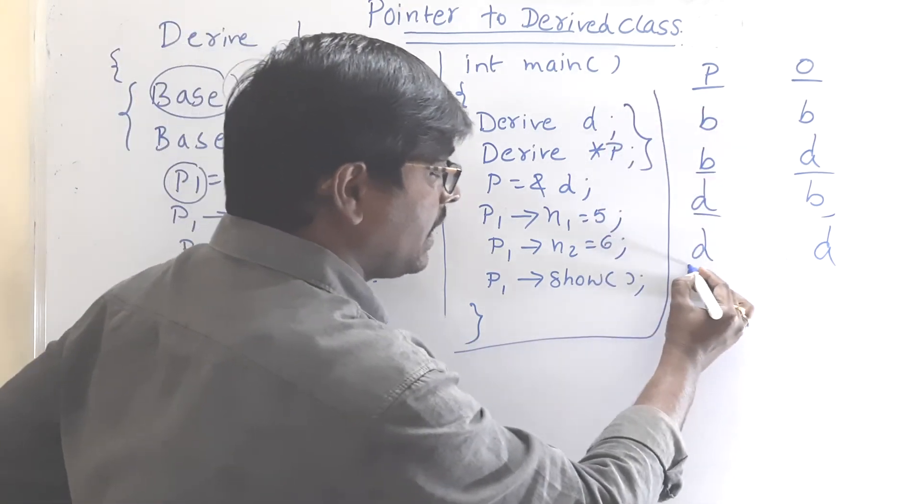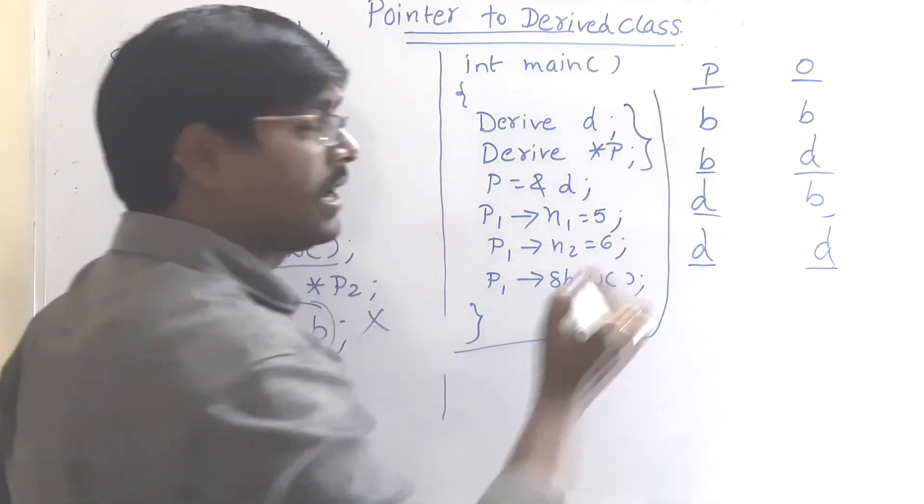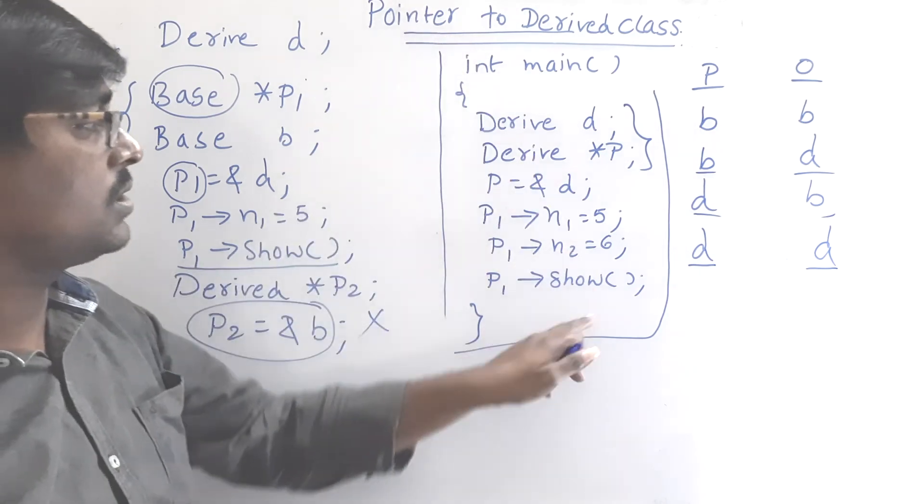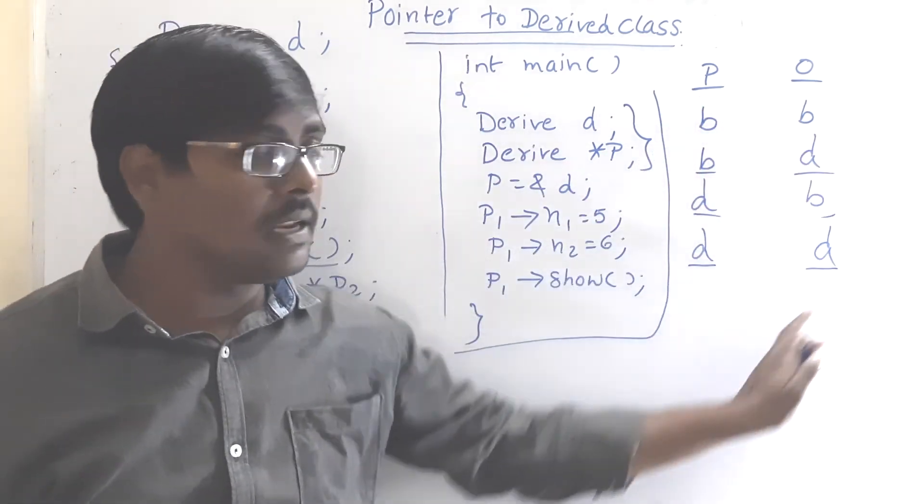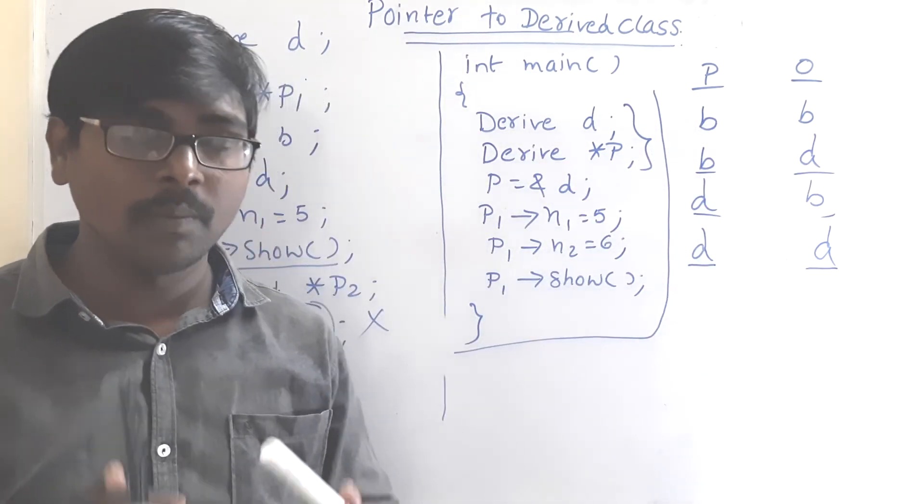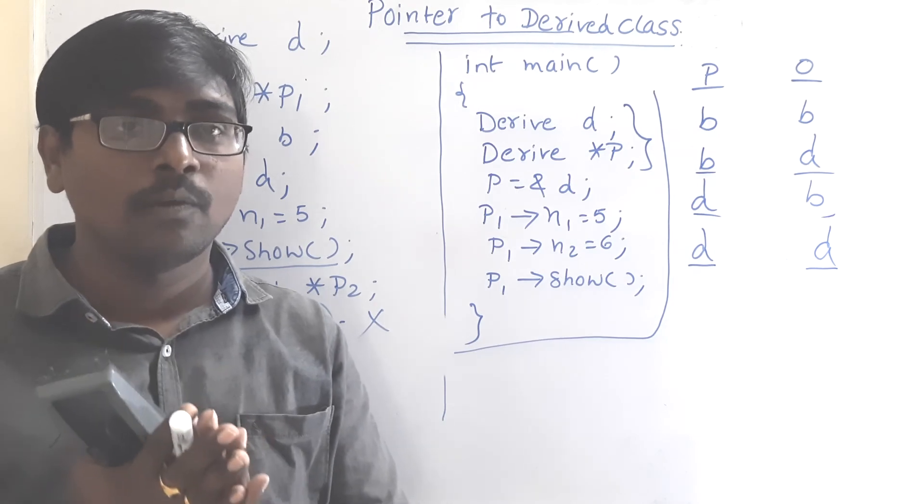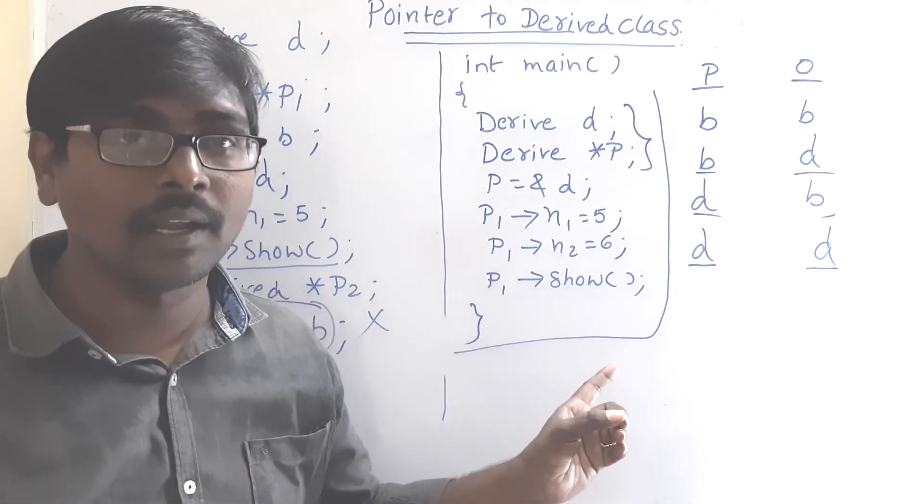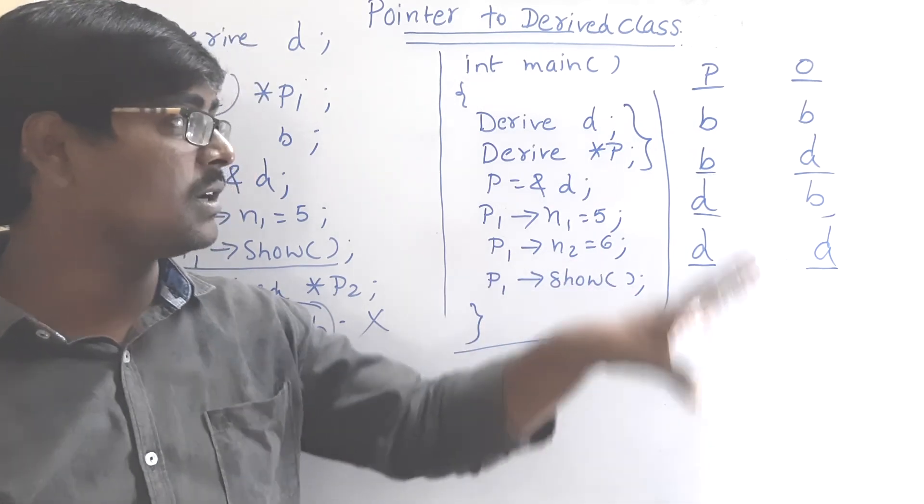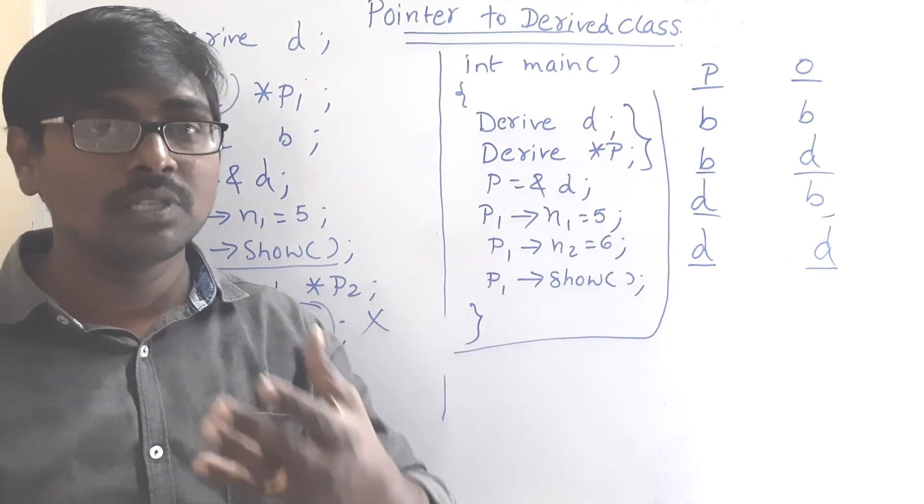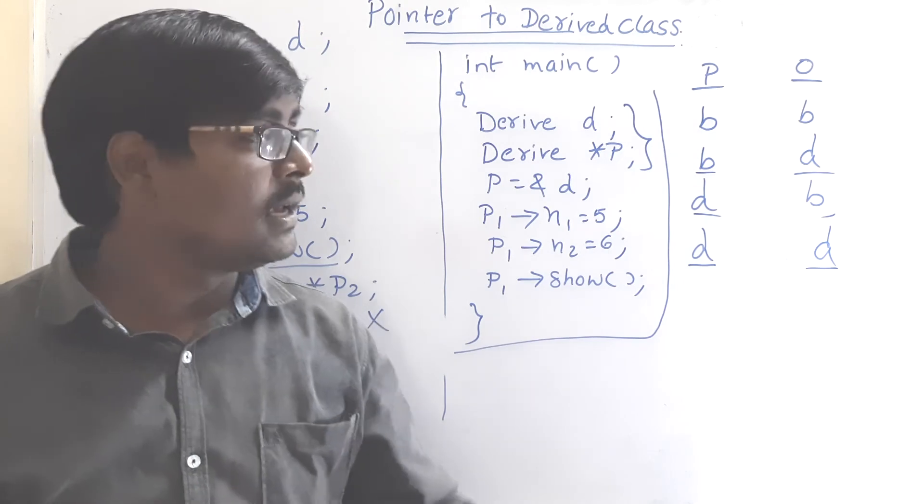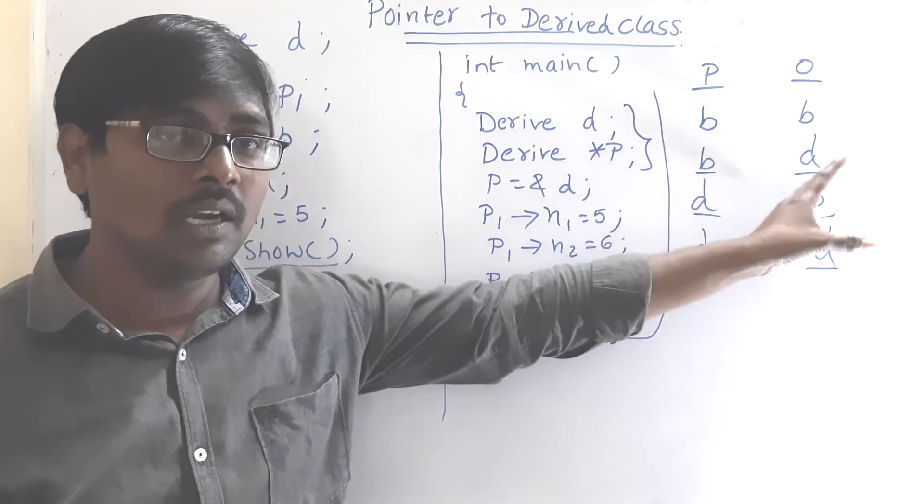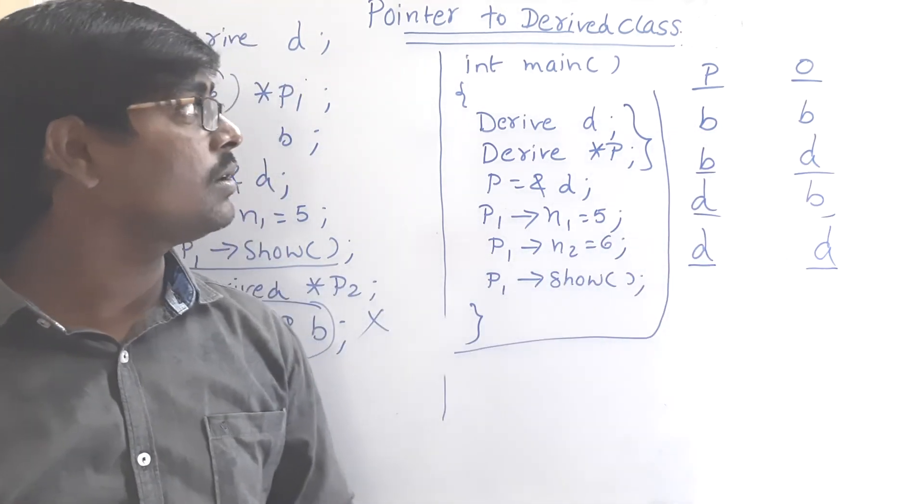Finally this one: derived class pointer, derived class object. This is our equation. In this way you can form any combinations. You have to remember only single point. We can access the members based on the type of the pointer, not type of the object by default. If you are using the concept of virtual, then we can access based on the type of the object. Okay thank you.